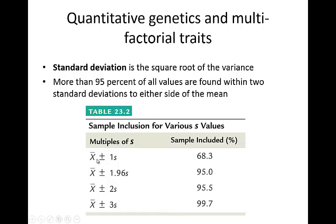If you're looking at one standard deviation, you're going to include 68% of the sample. Close to two standard deviations, you're going to have 95%. If you go to three standard deviations, you're going to include 99.7% of the population, so nearly everyone is going to fall within this. Now, if you're looking at something like height, there are people who have gigantism and are very, very tall, or people who are very short, and they may fall outside of this spectrum, but most people are going to be within this particular variance.